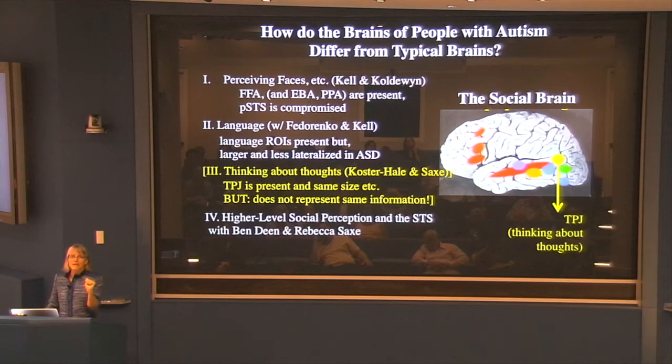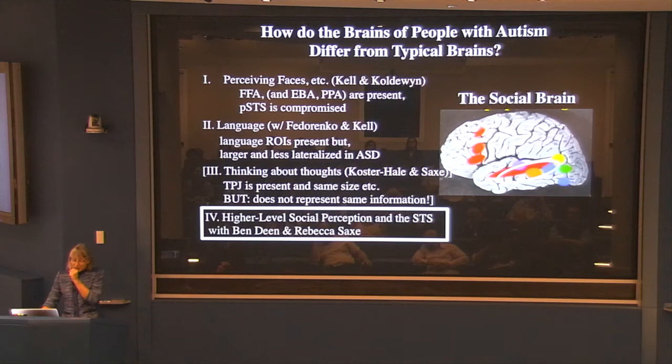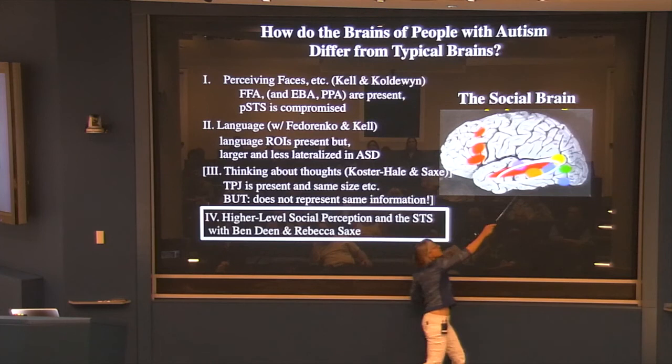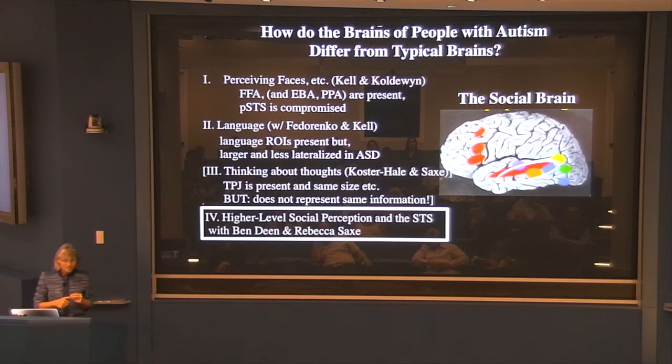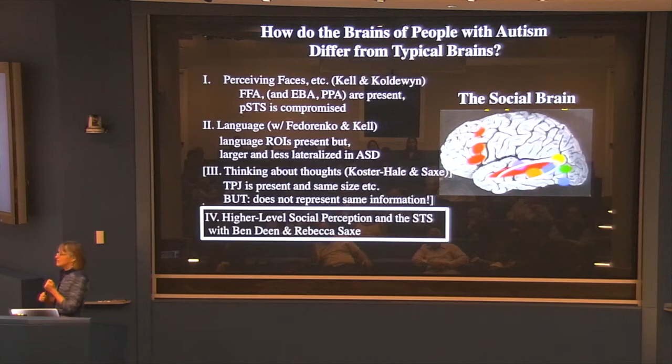So here's a case where the region is there but it's functioning differently and not representing this information that's represented in typical subjects. On to the next thing: the temporal parietal junction — that little yellow blob — is the region engaged in thinking about other people's thoughts. This whole region of the superior temporal sulcus has been implicated by many people for a long time in different aspects of high-level social perception.